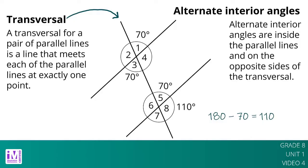It turns out that there are only two different measures. In this example, angles 1, 3, 5, and 7 measure 70 degrees, and angles 2, 4, 6, and 8 measure 110 degrees.